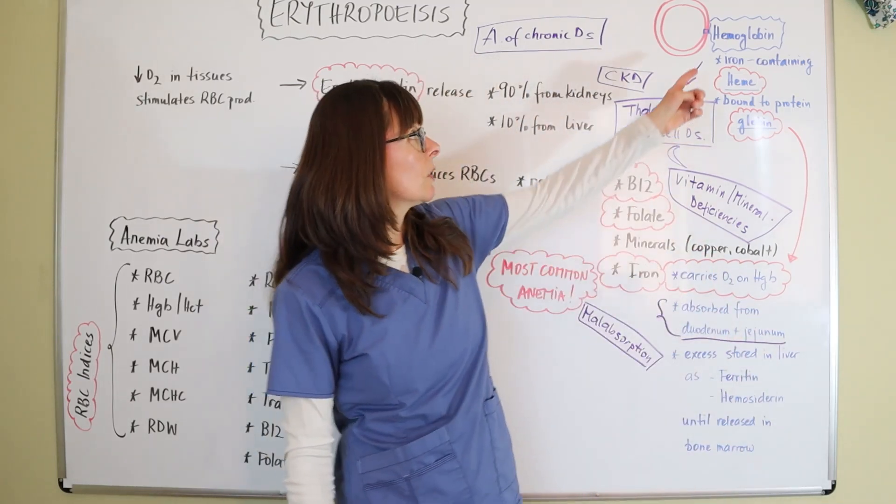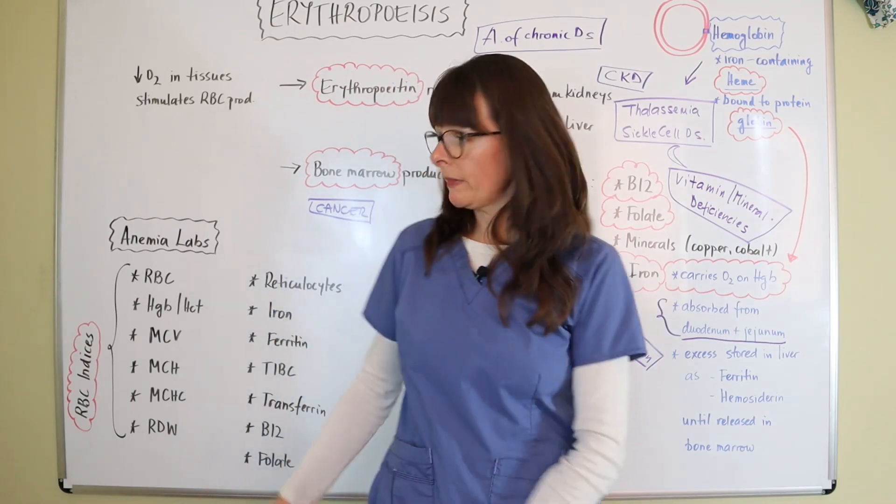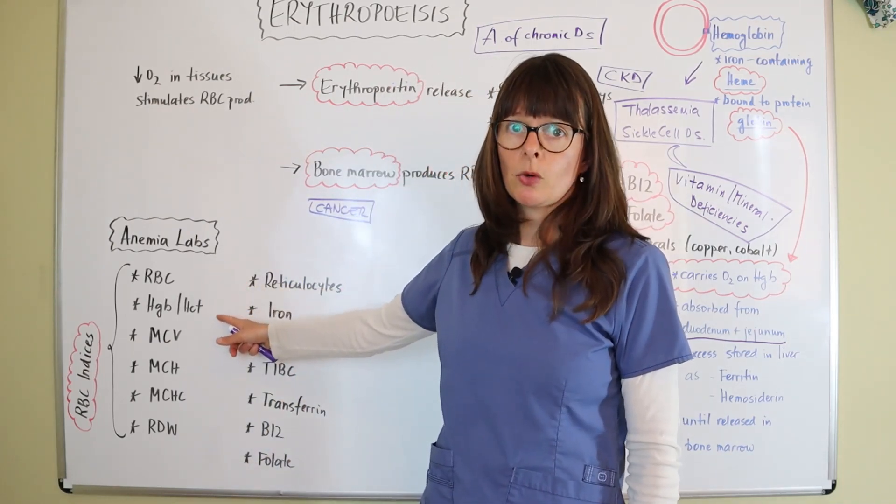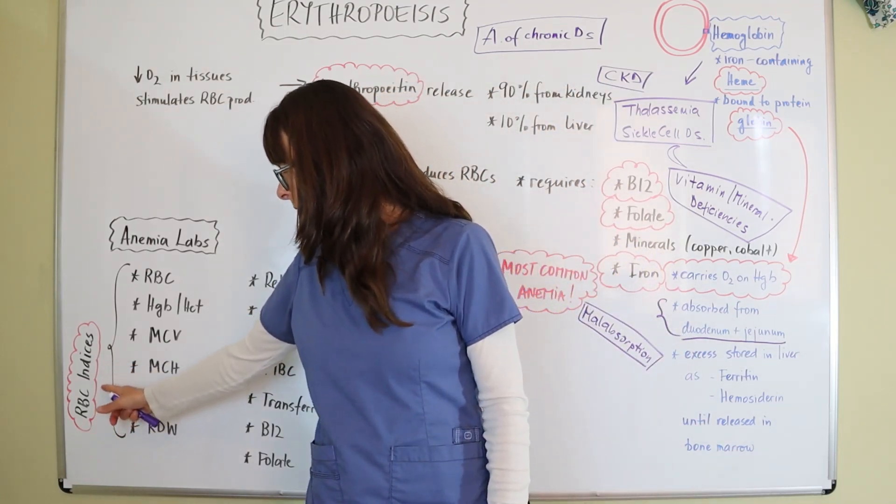And looking over here, hemoglobin is attached to the red blood cells. So automatically, when the red blood cells are low, hemoglobin and hematocrit are going to be low, and then we have these indices called red blood cell indices.